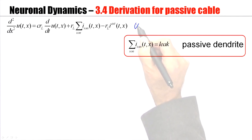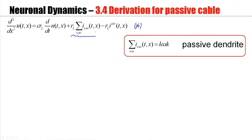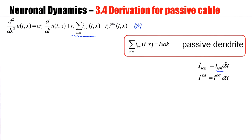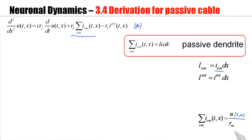Up here we have the equation that I derived in part two. This is the cable equation for arbitrary choices of ion current. But now let's focus on a passive dendrite. Remember that the little i is a specific current per unit length of cable. Ohm's law tells us that the ion currents can be described by a linear relation between the voltage at location x and the membrane resistance. And the little r indicates that again this is something per unit length. So let's plug this in.